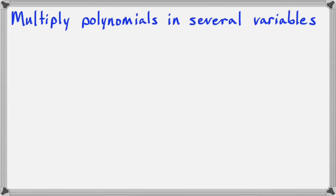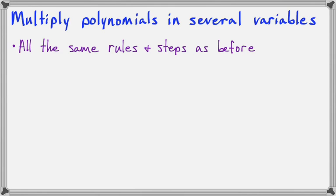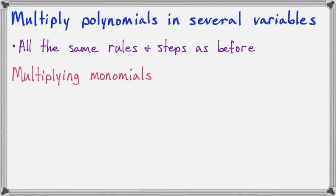In this lesson we're going to multiply polynomials in several variables. This is all the same multiplication rules and steps that we've seen before. So let's start out with multiplying a couple of monomials together.